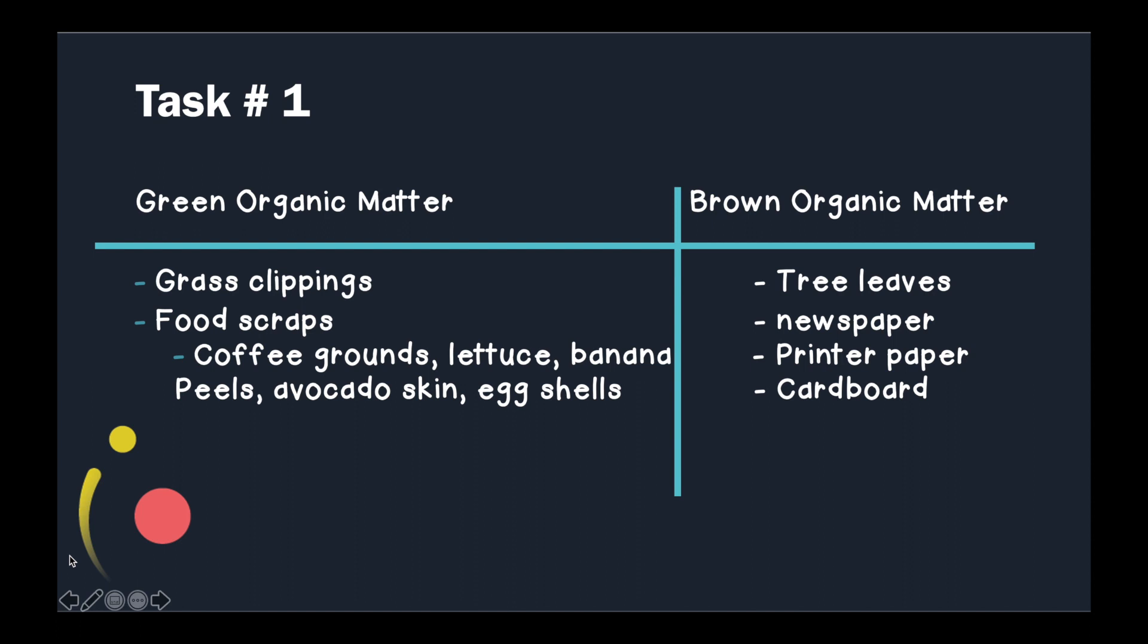Okay, friends, hopefully by now, you've been able to write down some green and brown organic materials that we can compost. Let's see if we came up with the same ones. My green organic matter included grass clippings, food scraps, and some of those food scraps that I asked you about before could have included coffee grounds, lettuce, or any kind of vegetable, banana peels, avocado skins, and eggshells. Did you put any of those on your list? Awesome. Some of the brown organic matter that can be composted includes tree leaves, newspaper, printer paper, or cardboard.